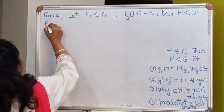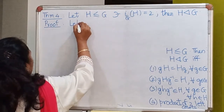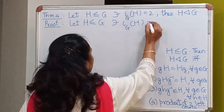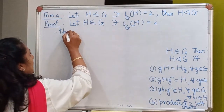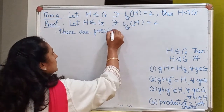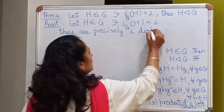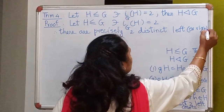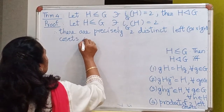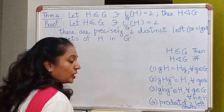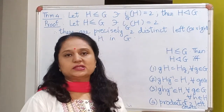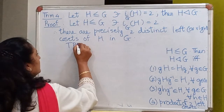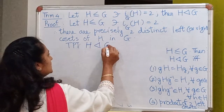Let us assume that H is already a subgroup of G and the index of this subgroup in the group is 2. That will mean there are precisely two distinct left or right cosets of H in G. Our aim is to prove that H is a normal subgroup of G.